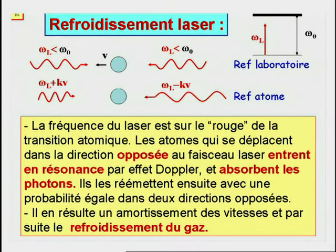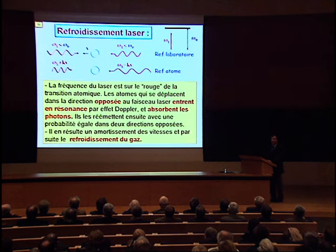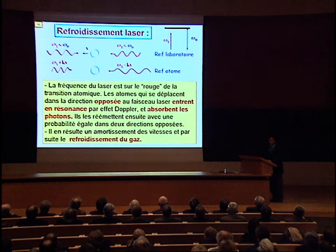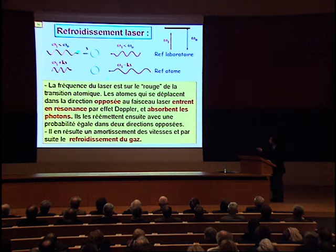Une technique fondamentale de refroidissement est le refroidissement laser. Le principe de cette méthode est schématisé dans ce transparent où on voit un faisceau laser qui vient de la gauche et un autre qui vient de la droite. La fréquence du laser est en dessous de la transition atomique : la valeur de la fréquence est plus basse que la valeur de la fréquence interne des atomes. Par conséquent, les atomes qui se déplacent dans la direction opposée au faisceau laser entrent en résonance par effet Doppler et absorbent les photons.